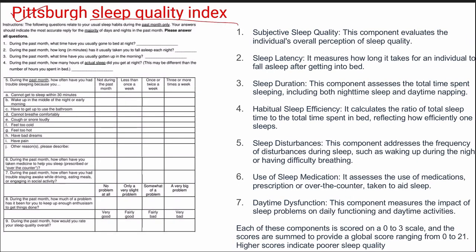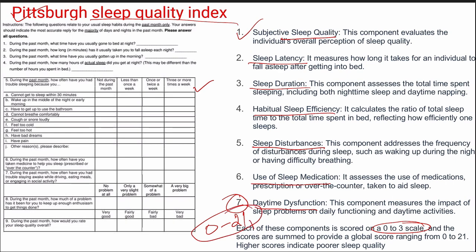Next is the Pittsburgh Sleep Quality Index, which measures sleep quality across seven key domains: subjective sleep quality, sleep latency, sleep duration, habitual sleep efficiency, sleep disturbances, use of sleep medication, and daytime dysfunction. Scored for the past one week, each of the seven questions has scores between 0 to 3, yielding a total range of 0 to 21. A score of 21 indicates poor sleep quality and 0 indicates the best sleep quality.